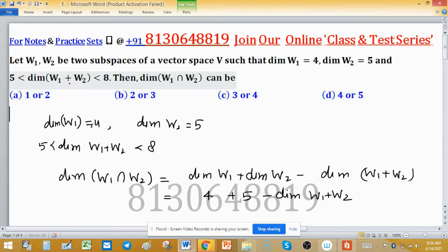Now possibility of dimension of W₁ plus W₂ is either 6 or 7. There are two possibilities of this dimension. So for example, once you put 6, then 9 minus 6 gives you 3, and 9 minus 7, when you put dimension of W₁ plus W₂ is 7, means 9 minus 7 gives you 2.